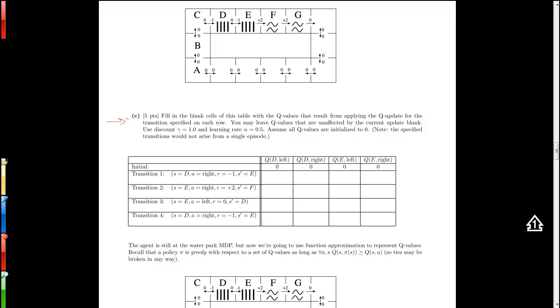Let's look at C. Filling the blank cells of this table with the Q values that result from applying the Q update for the transition specified on each row. You may see Q values that are unaffected by the current update blank. Use discount gamma equals 1.0 and learning rate alpha equals 0.5. Assume all Q values are initialized to zero.